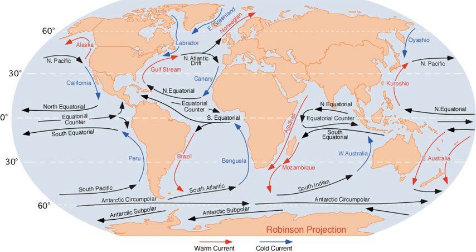Surface currents make up only 8% of all water in the ocean, are generally restricted to the upper 400 meters of ocean water, and are separated from lower regions by varying temperatures and salinity which affect the density of the water, which in turn defines each oceanic region. Because the movement of deep water in ocean basins is caused by density-driven forces and gravity, deep waters sink into deep ocean basins at high latitudes where the temperatures are cold enough to cause the density to increase. Ocean currents are measured in Sverdrups, where 1 Sv is equivalent to a volume flow rate of 1 million cubic meters per second.